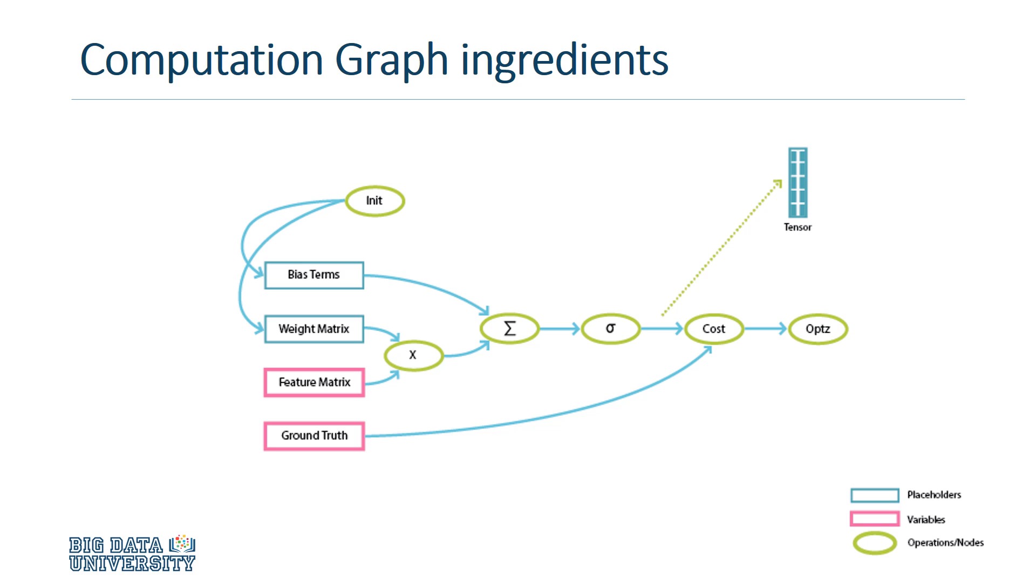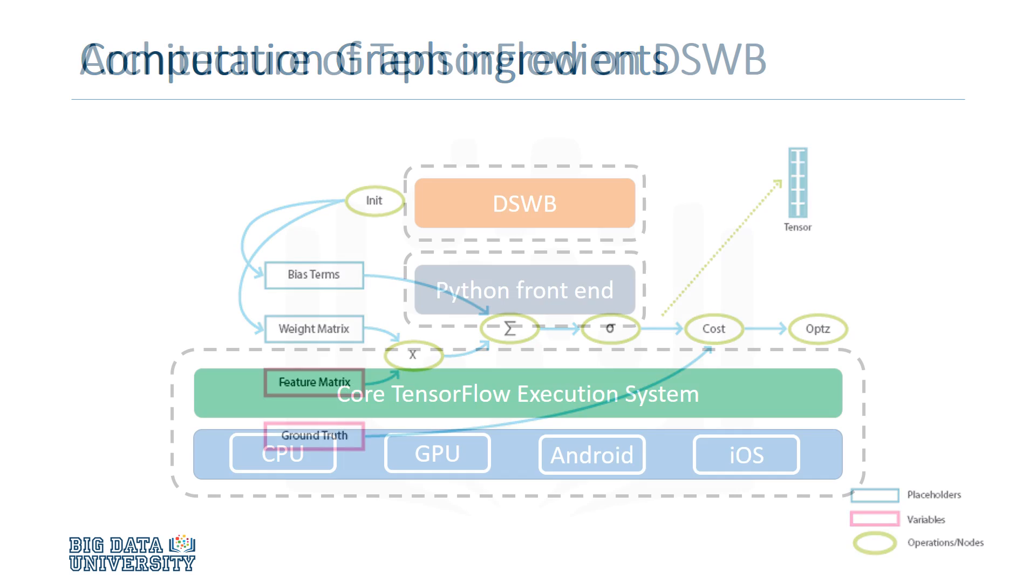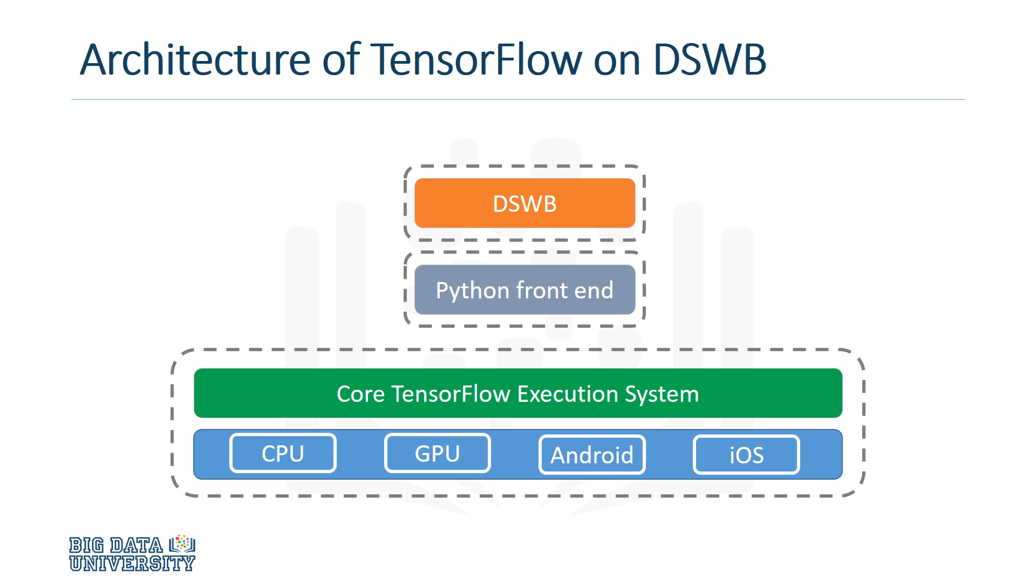In TensorFlow, a graph will only run computations after the creation of a session. TensorFlow's flexible architecture allows you to deploy computation on one or more CPUs or GPUs, or in a desktop, server, or even a mobile device. All of this can be done while only using a single API.